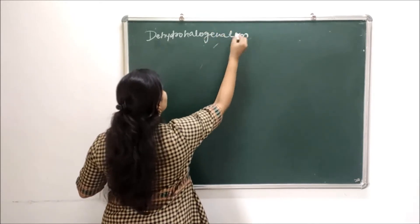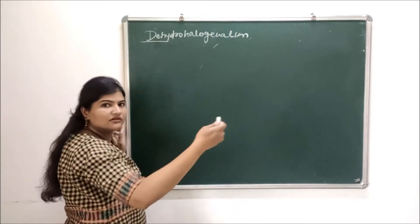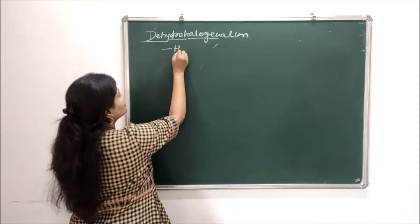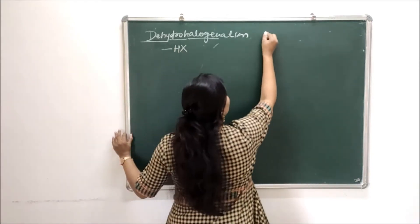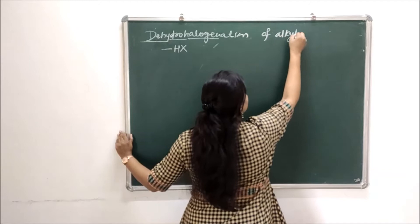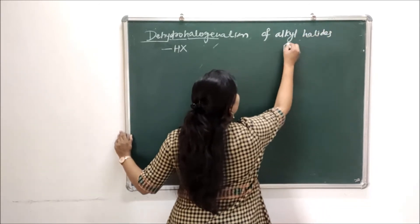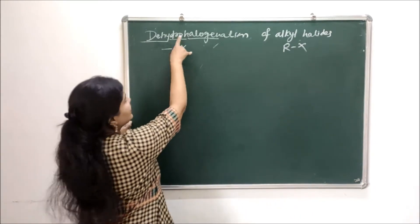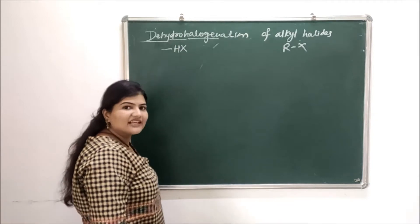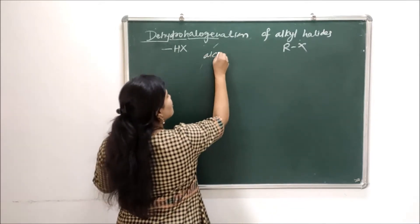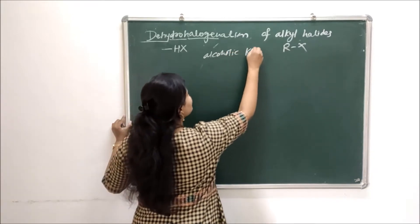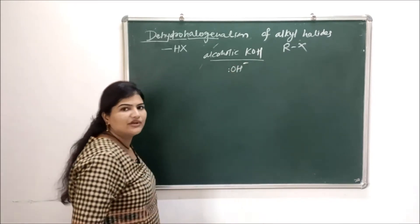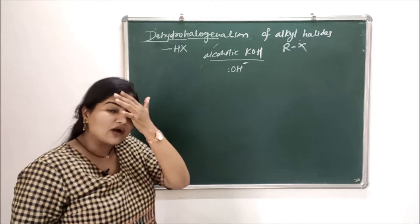Dehydrohalogenation means: 'de' is to remove, 'hydro' is for hydrogen, and 'halogen' is for halogen. So you are going to remove HX from the alkyl halide — alkyl halide is nothing but RX. This reaction generally happens in presence of alcoholic alkalis like alcoholic KOH or alcoholic NaOH, which supplies the nucleophile — the OH minus (hydroxyl) ion.